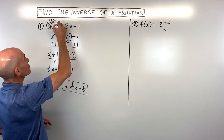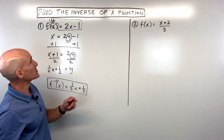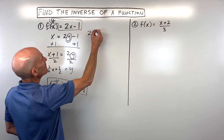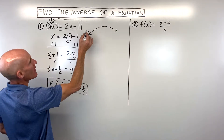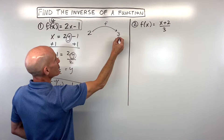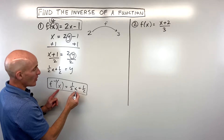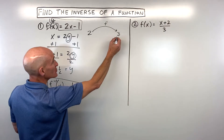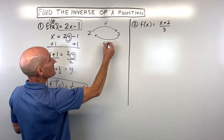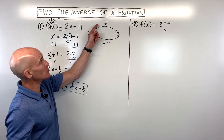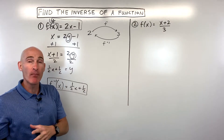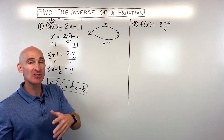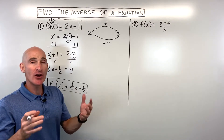Let's look at this more closely. If our original function is y equals 2x minus 1, and we put 2 in for x: 2 times 2 is 4, minus 1 is 3. Then if we put 3 into the inverse function: ½ times 3 is 3 halves, plus ½ is 4 halves, which equals 2. The function and the inverse function undo each other — like multiplying and dividing, or adding and subtracting, or squaring and square rooting.